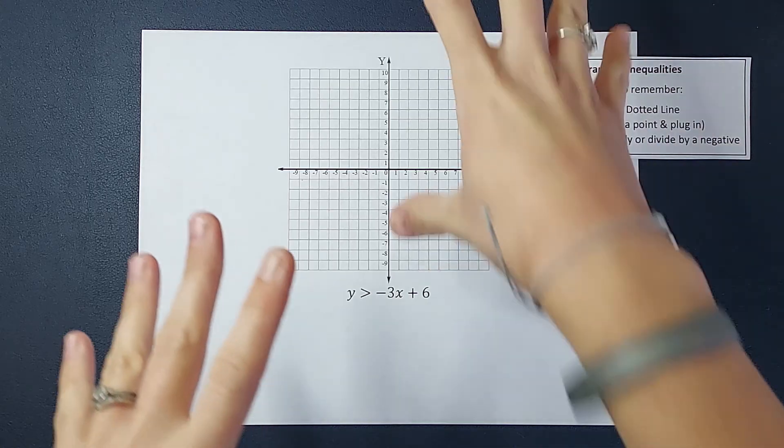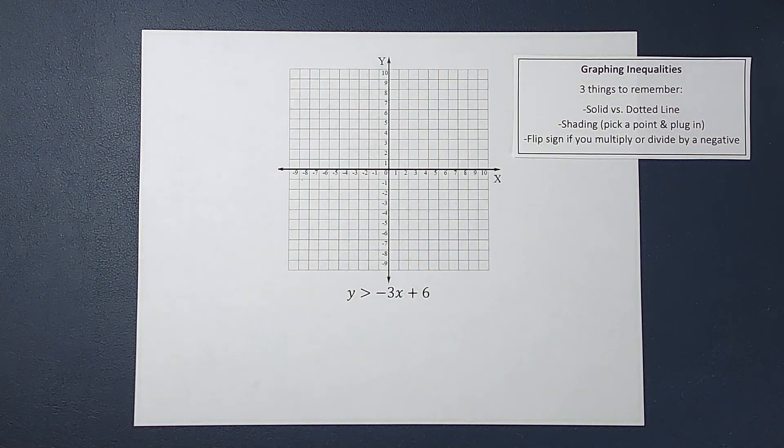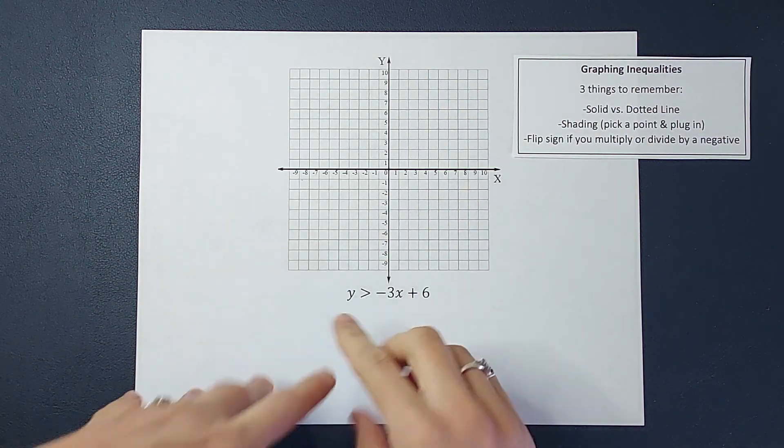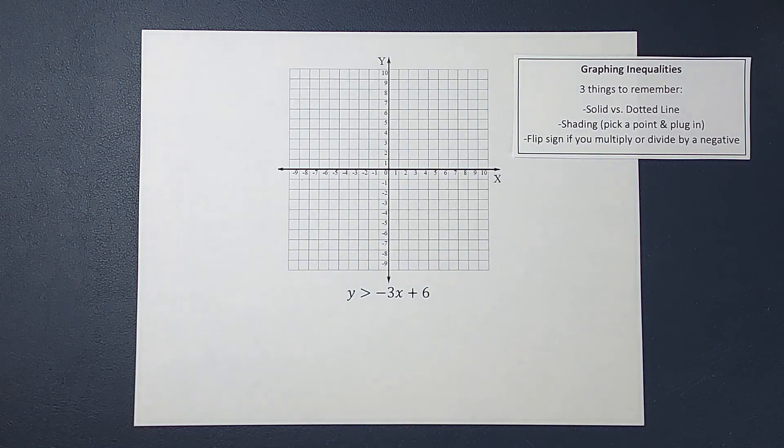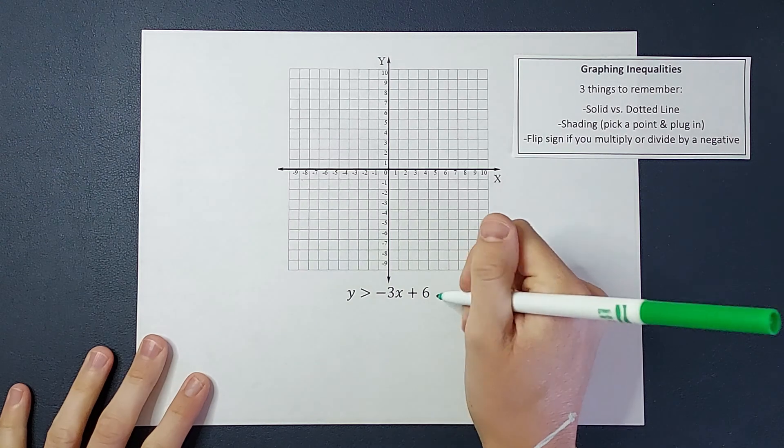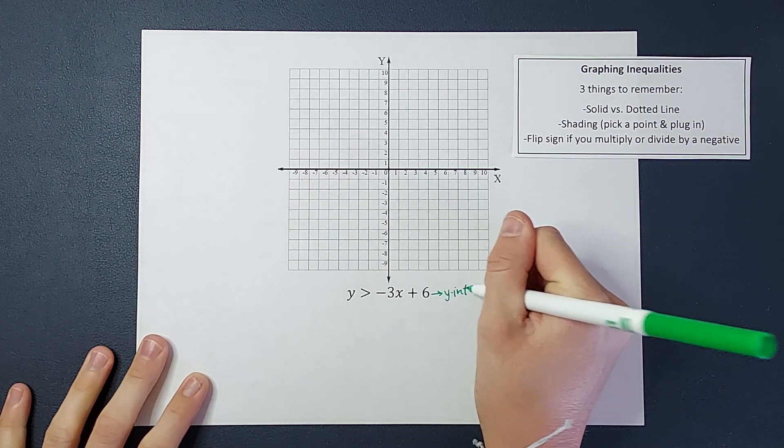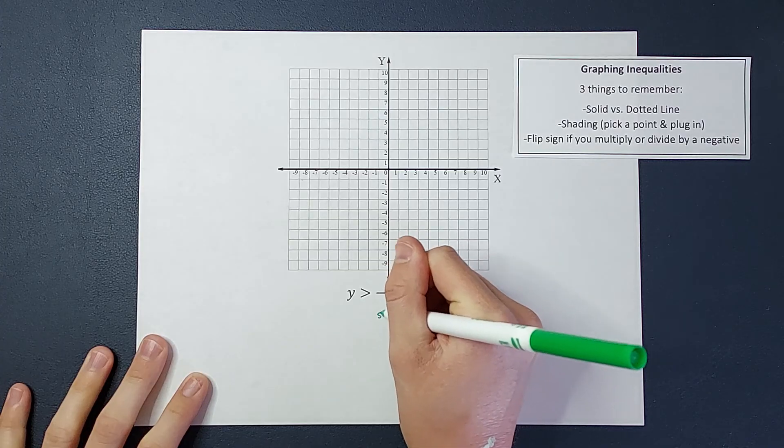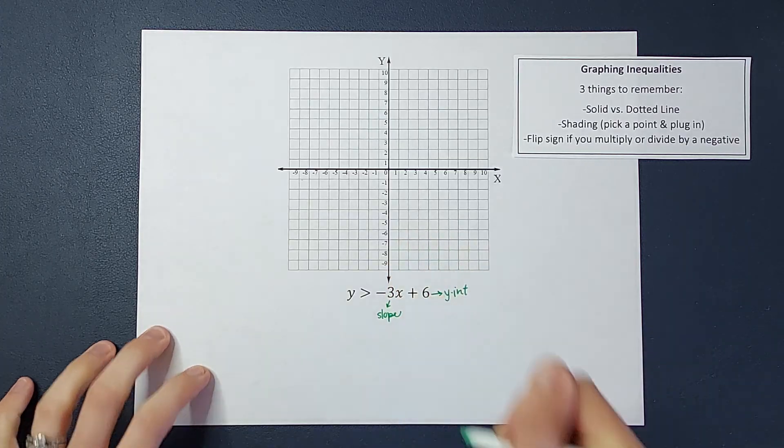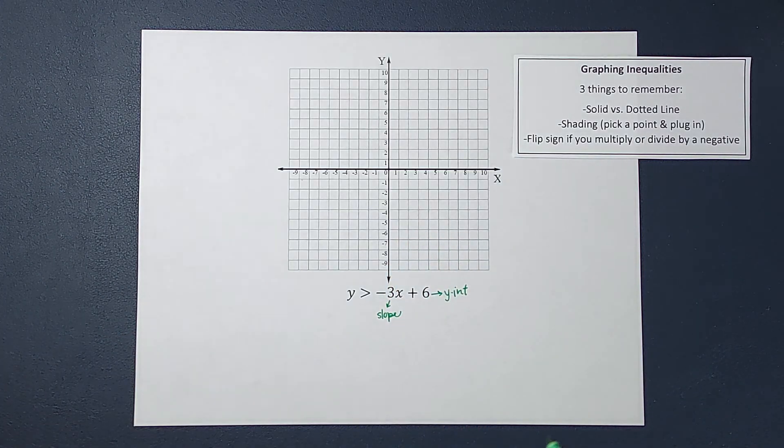Next we will talk about these as we do the problem. First thing, I can just kind of pretend this is an equal sign for a minute to graph it. Just like normal, this is going to be my y-intercept and my slope. If you need a graphing line review, I'll link one in the corner.